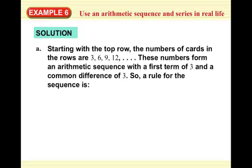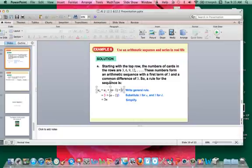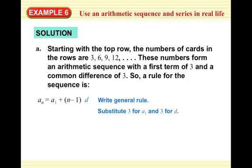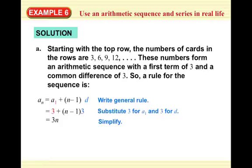Starting with the top row, the number of cards in each row are 3, 6, 9 — and if there were a fourth row it would be 12. These form an arithmetic sequence with first term A1 equals 3 and common difference 3, since 3 plus 3 is 6, 6 plus 3 is 9, 9 plus 3 is 12. Using the general rule, A_N equals 3 plus (N minus 1) times 3. Distributing gives 3 plus 3N minus 3, which simplifies to 3N. So for any row, you multiply the row number by 3.